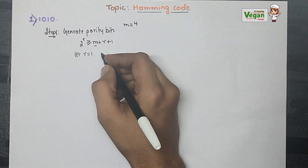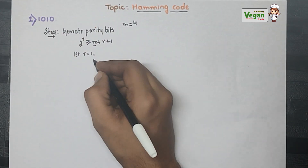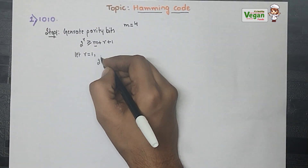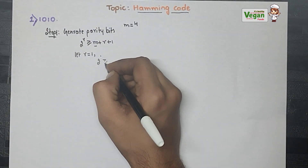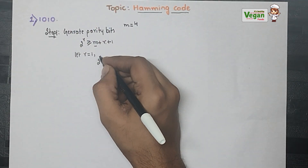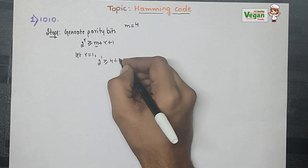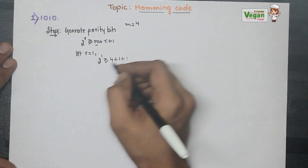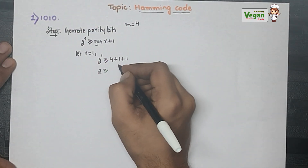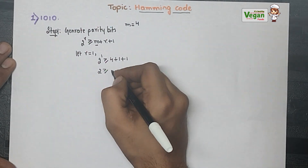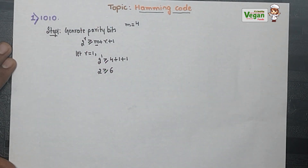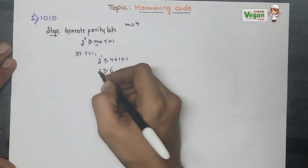Let r = 1. Then 2^1 ≥ 4 + 1 + 1, which gives 2 ≥ 6. This condition is not correct, so r = 1 does not work.